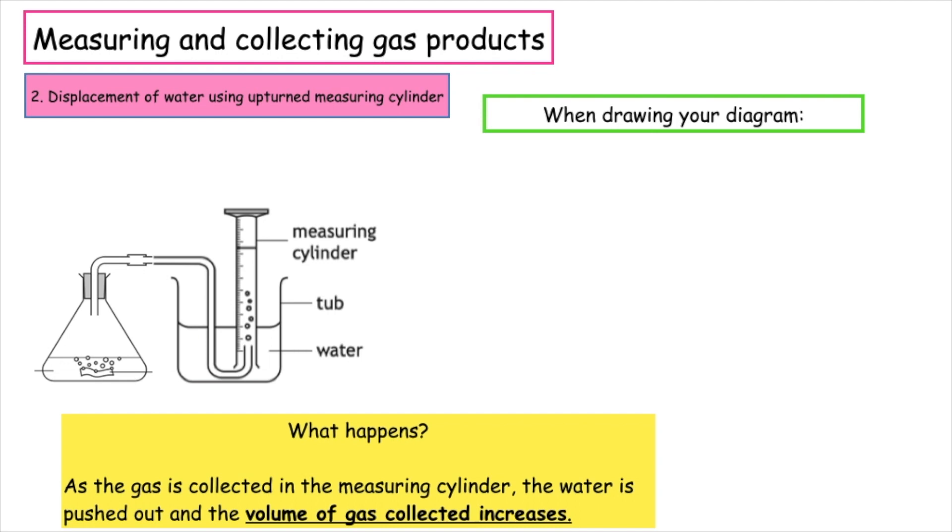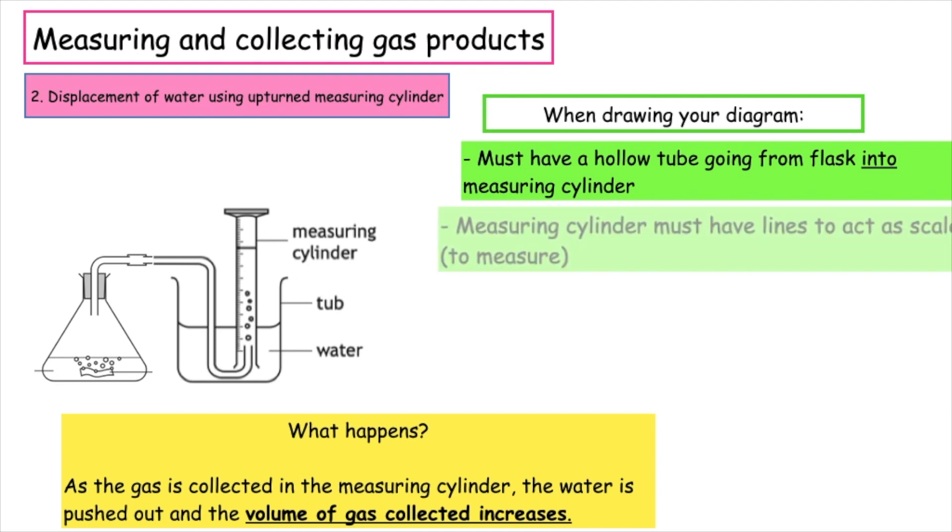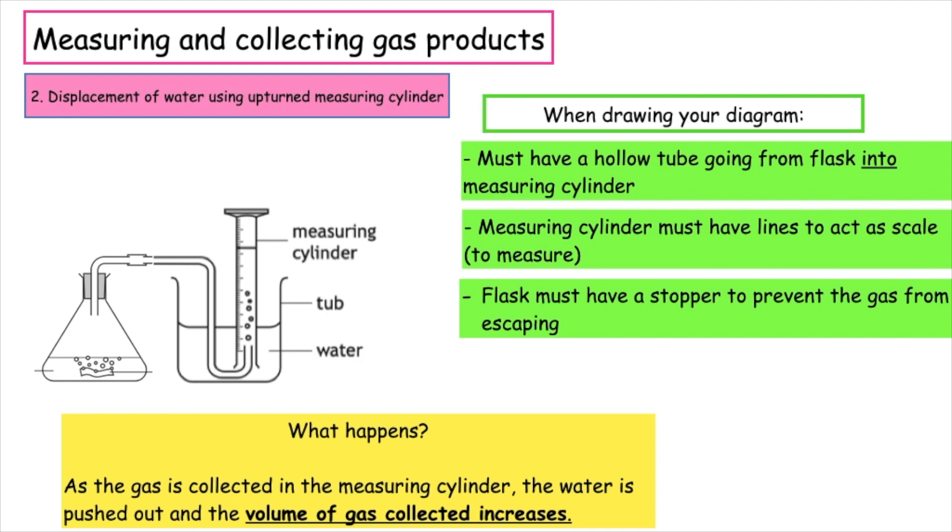When drawing your diagram, you must have a hollow tube going from the flask into the measuring cylinder so that the gas can pass through to be collected. The measuring cylinder must have lines to act as a scale because we are measuring the volume of gas products. The flask must have a stopper to prevent the gas from escaping—if the gas escapes, it won't pass through the tube to be collected.